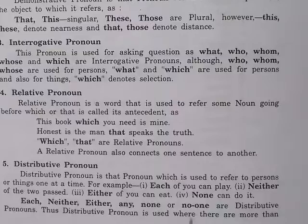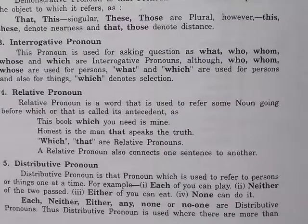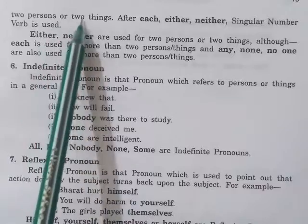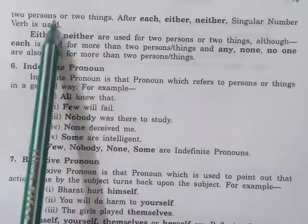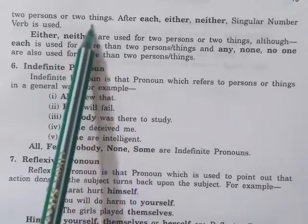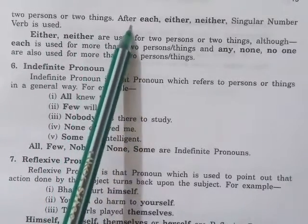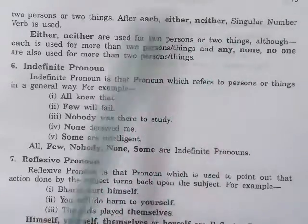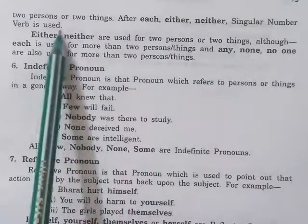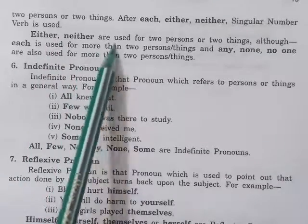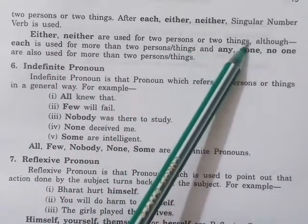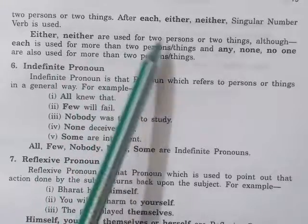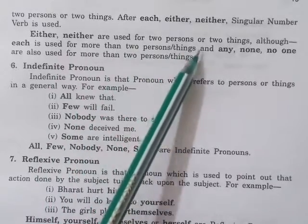Distributive pronoun is used where there are more than two persons or two things. After each, either, neither, a singular number verb is used. Either and neither are used for two persons or two things, while each is used for more than two persons or two things.